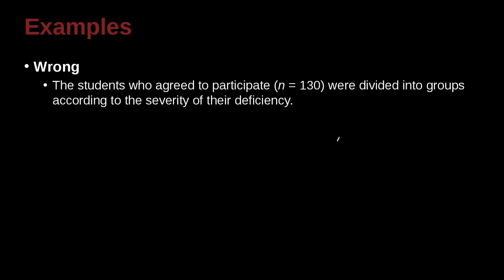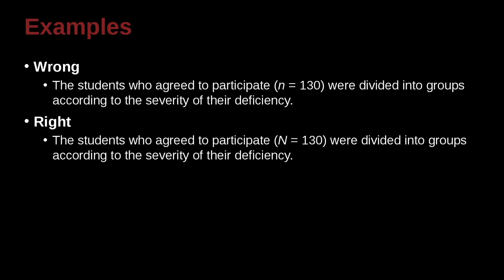The students who agreed to participate, N equals 130, were divided into groups according to the severity of their deficiency. And here, of course, this must be wrong, because here we have a small N, but here we say they're divided into groups. So we start with 130, then we divide them into groups.